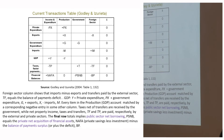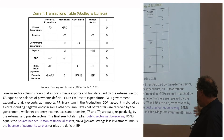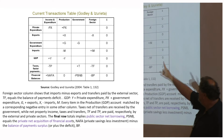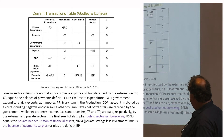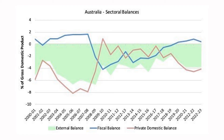In an open economy, the bottom row shows that public sector net borrowing equals the private net acquisition of financial assets — private savings less investment — minus the balance of payments surplus. This is the crucial identity in an open economy, where you've got the foreign sector as well as government and the productive sector. This is from a paper by Wynne Godley and Gennaro Zezza at the Levy Institute, Bard College.